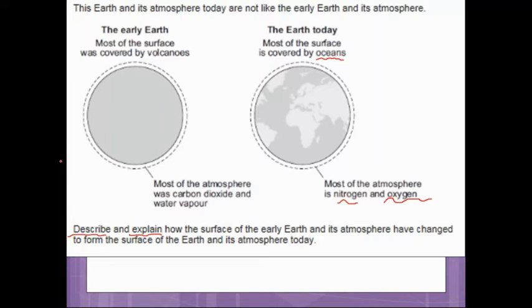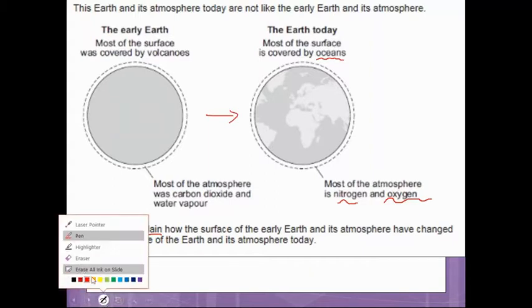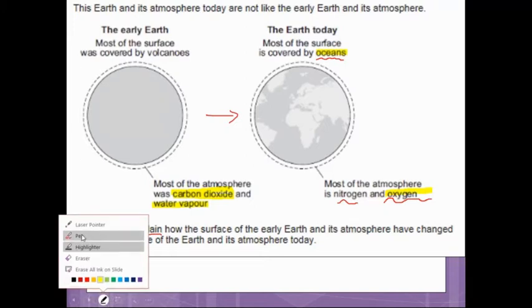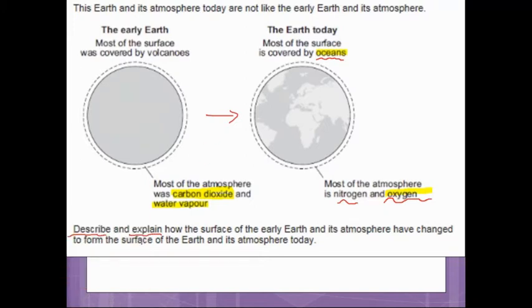When you're given a question like this, a six marker, best thing to do is try and break it up into different chunks. It's wanting us to describe, so identify some differences, and explain why those differences have happened. The big differences are lots of carbon dioxide here and lots of water vapor here, whereas in here we've got water as a liquid, very little carbon dioxide and lots of oxygen. So we need to talk about how the carbon dioxide decreased.